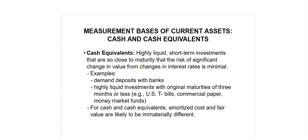Accounting standards require that reporting entities report certain specific line items if they are material on the face of the balance sheet. Among the current assets, required line items include cash and cash equivalents, trade and other receivables, inventories and financial assets with short-term maturities. Companies present other line items as needed, consistent with requirements to separately present each material class of similar items. Cash and cash equivalents are financial assets, and financial assets are generally measured and reported at their amortized cost or fair values.